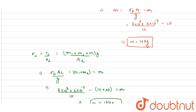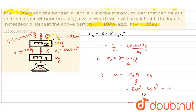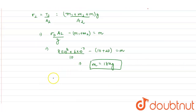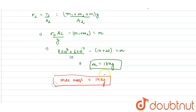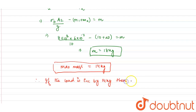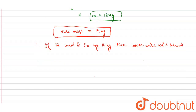Wire 1 can sustain a maximum added mass of 14 kg and wire 2 can sustain 18 kg. So if we put a mass of 18 kg, wire 1 will break. Therefore, the maximum mass that can be placed on the hanger is 14 kg, and if the load is increased beyond 14 kg, the lower wire (wire 1) will break first.